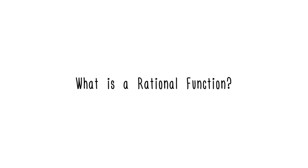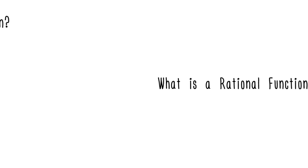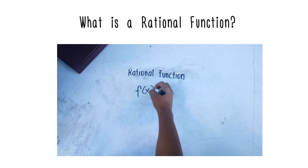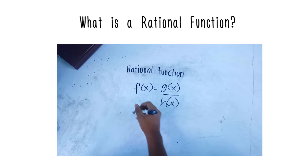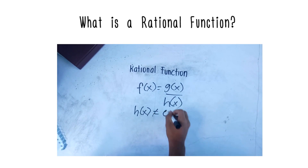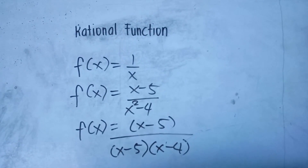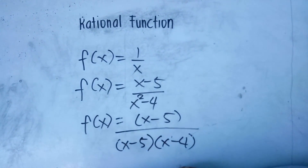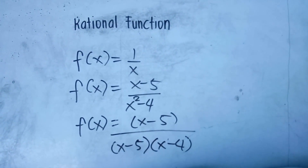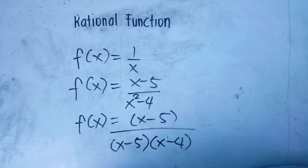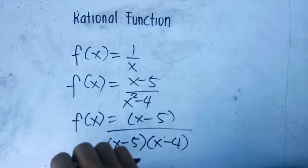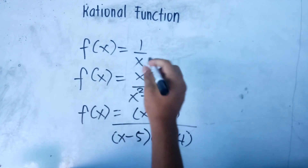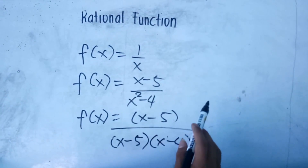Good day everyone. Our lesson for today is all about rational functions. A rational function is defined as f of x equals g of x over h of x, where h of x is not equal to zero. A rational function is a function identified by a fraction, defined by the division of two polynomials.